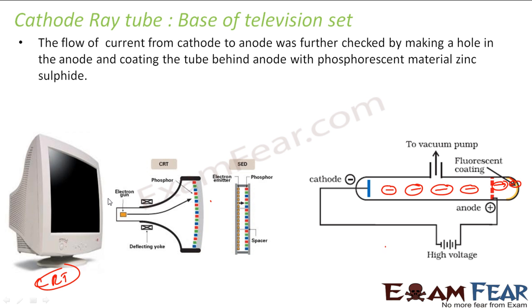This is a very basic concept — the concept is the same: electrons hit the phosphorus and cause it to glow. From this, he concluded that there is something called the electron.